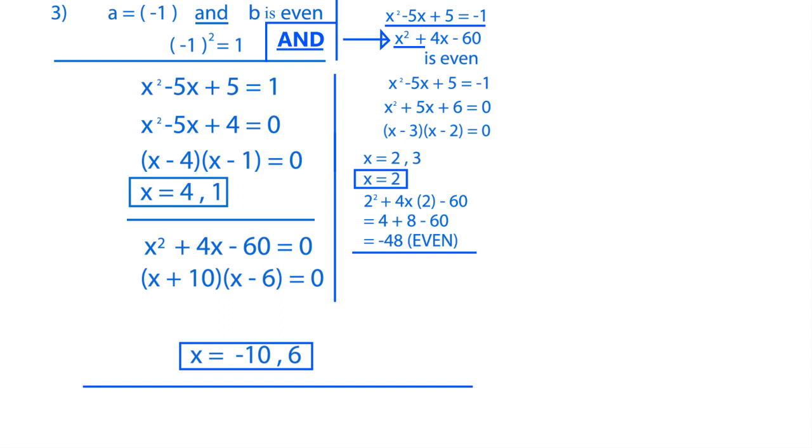And then finally, let's see x equals 3, what it does. If x equals 3, does this become even or not? So we will get x squared, which is 9, plus 4 times 3, which is 12, minus 60.